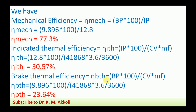Brake thermal efficiency η_BTH = (BP × 100) / (CV × MF), where BP is brake power, CV is calorific value, and MF is mass flow rate of fuel. η_BTH = (9.896 × 100) / (41868 × (3.6 / 3600)) = 23.64%.